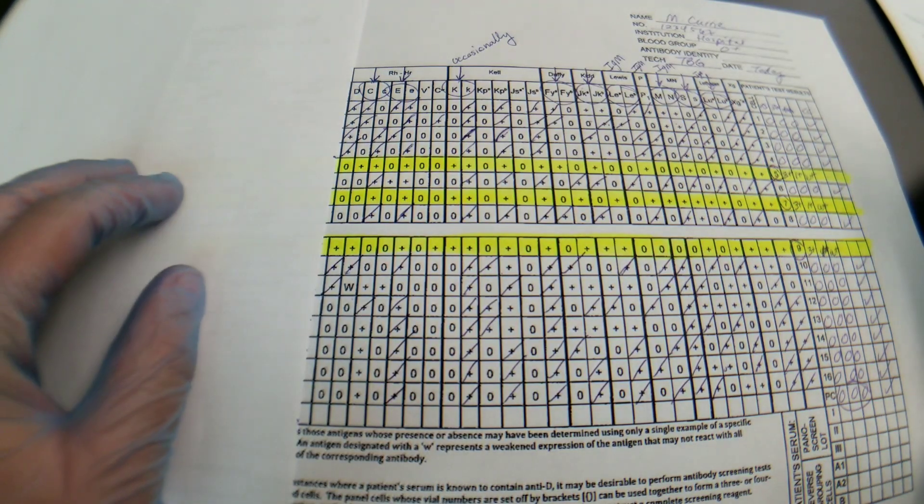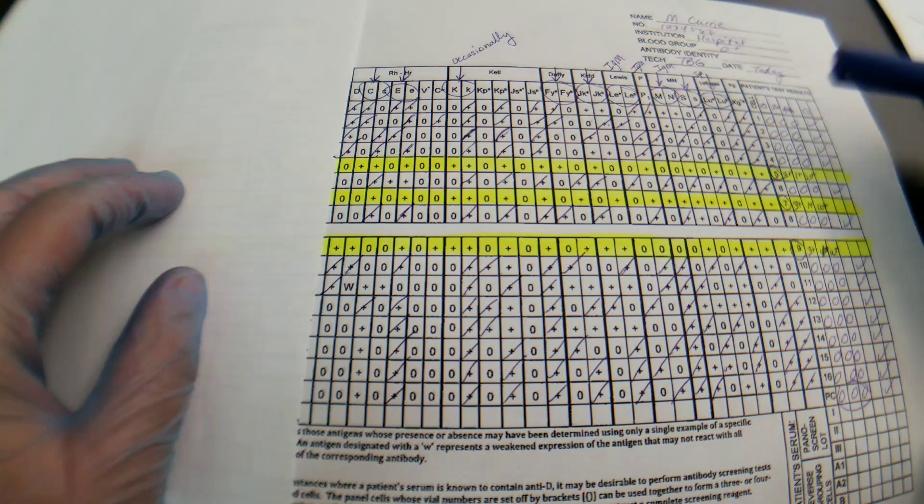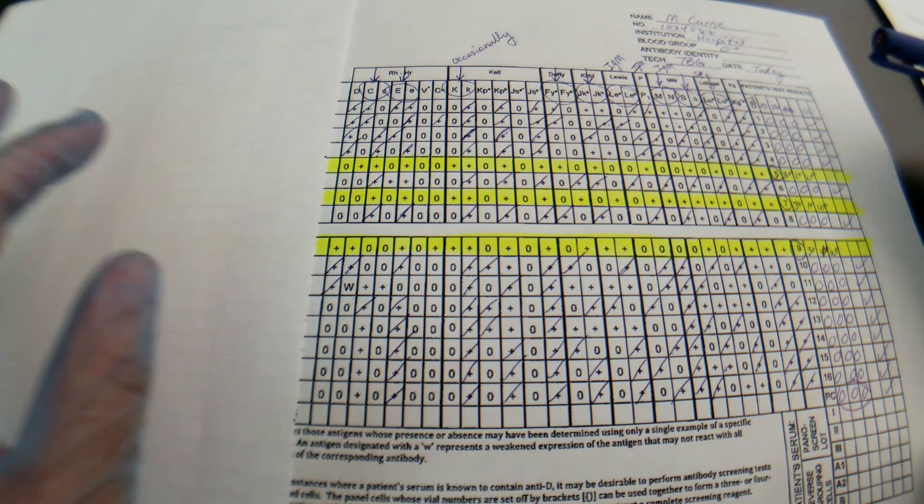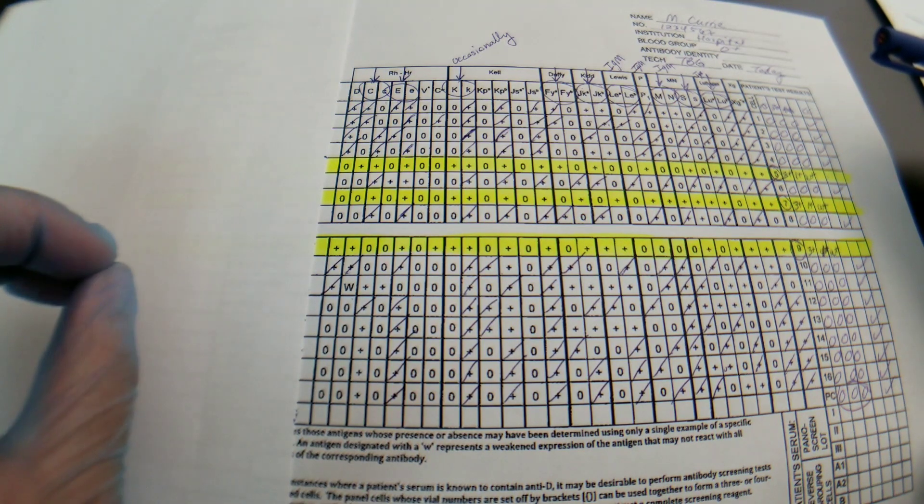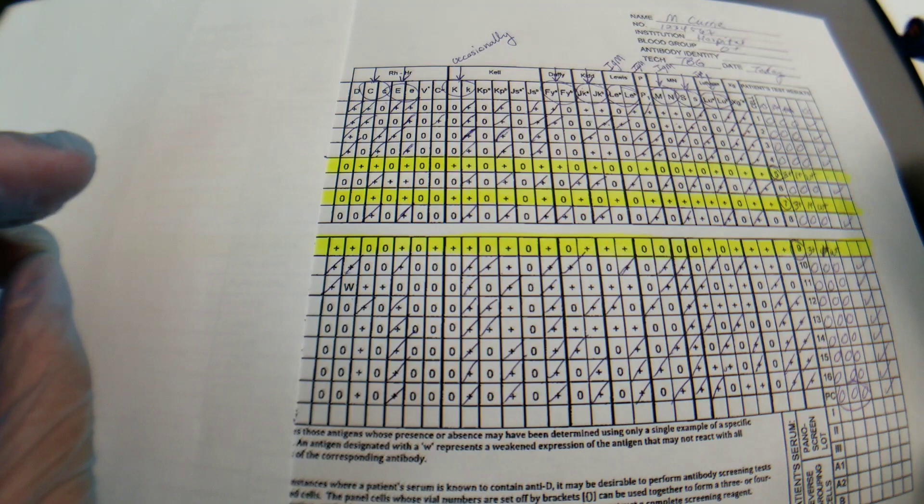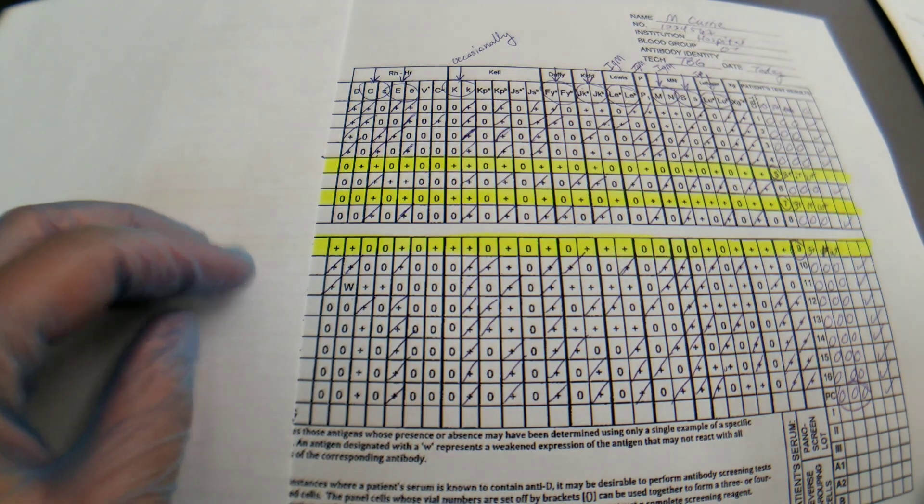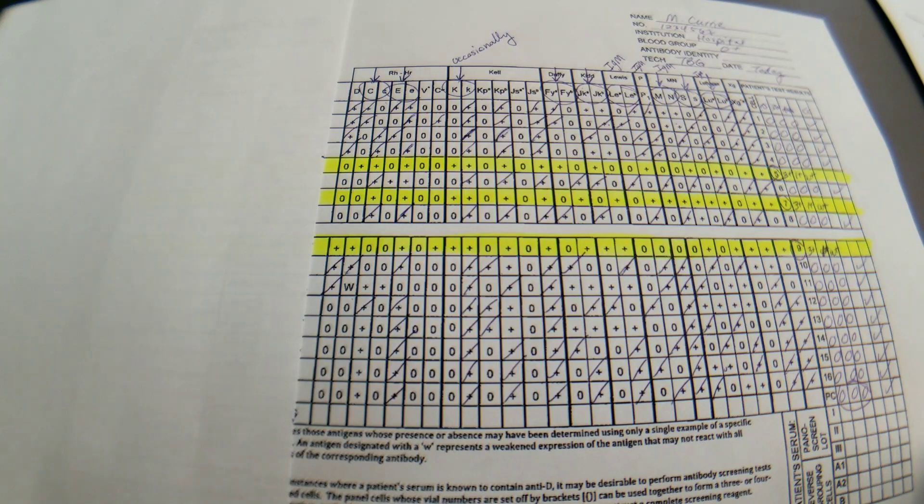Okay, so welcome to part two of interpreting the antibody identification panel for the antibody that I added to the patient specimen. Please make sure you watch the other videos, the antibody screen, the antibody identification panel, and the interpretation video part one before you watch this so that you'll get the whole process and it'll be so much fun.